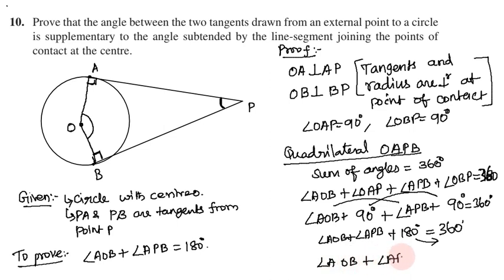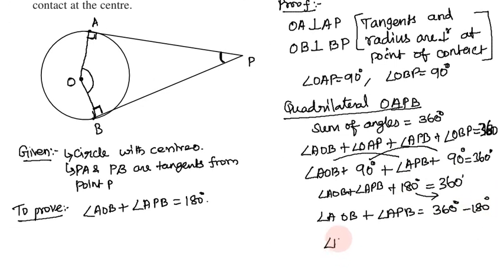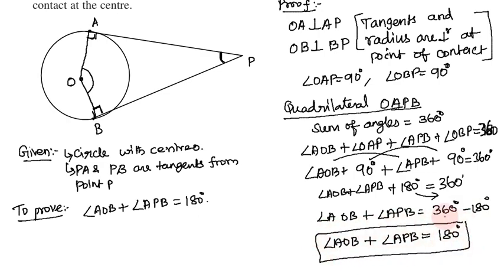So angle AOB plus angle APB equals 360 minus 180 degrees, which gives us angle AOB plus angle APB equals 180 degrees. This proves that the two angles are supplementary. Hence proved.